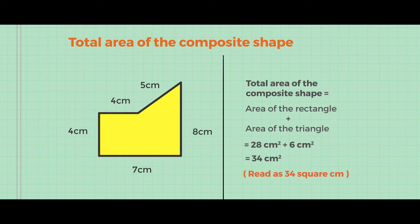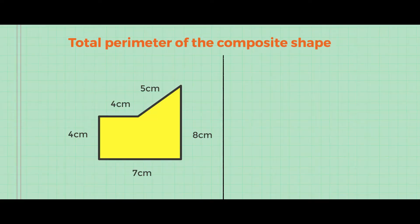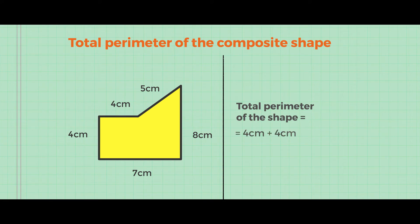Now let's calculate the perimeter of the composite shape. The total perimeter of the composite shape is equal to 4 centimetre plus 4 centimetre plus 5 centimetre plus 8 centimetre plus 7 centimetre, which gives you 28 centimetre.